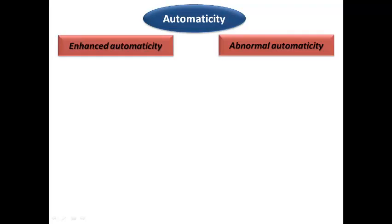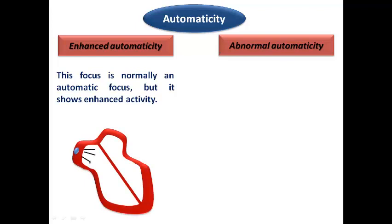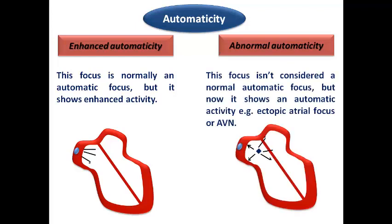Now discussing automaticity — we have two forms: enhanced automaticity and abnormal automaticity. Enhanced automaticity means the focus is normally an automatic focus but shows enhanced or accelerated activity. The focus that shows normal automaticity is the SA node, so when the SA node shows accelerated or enhanced activity we call this enhanced automaticity.